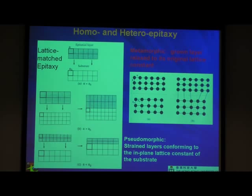Then there's metamorphic growth: after a certain thickness, the grown layer relaxes to its original lattice constant. This was traditionally considered bad because at the interface you get all kinds of dislocations. That was the traditional thinking.